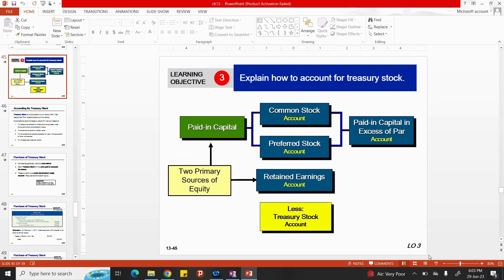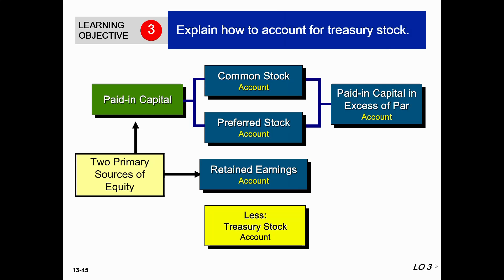Let's start with learning objective number three: how to account for treasury stock. We have already covered the parts of owners' equity for corporations — it has two components: paid-in capital and retained earnings. Paid-in capital has two categories: common stock and preferred stock, along with paid-in capital in excess of par. Retained earnings are earnings the company keeps rather than distributing to owners, because they want to use their own resources for future investment purposes.